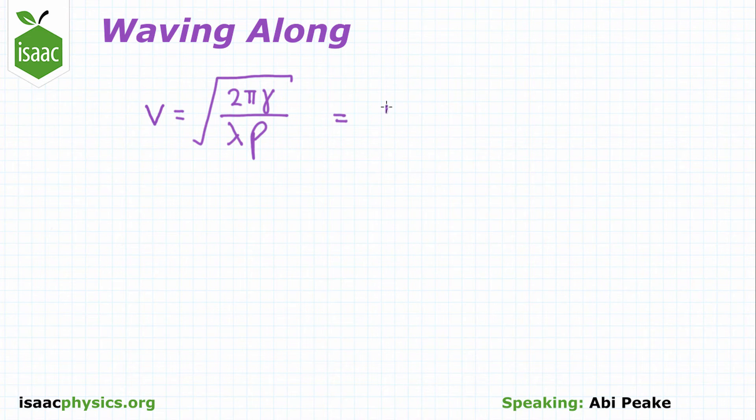This is clearer to see when you combine all the constants together. So you can write that k, a combination of all the constants, times 1 over the square root of λ is the wave speed.